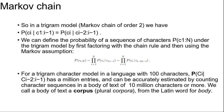For a trigram character model in a language with 100 characters, the probability of Ci given Ci-2 to Ci-1 has a million entries and can be accurately estimated by counting character sequences in a body of text of 10 million characters or more. We call a body of text a corpus, from the Latin word for body.